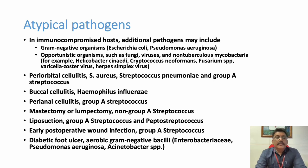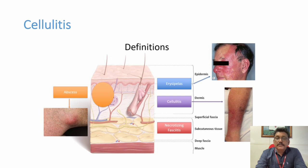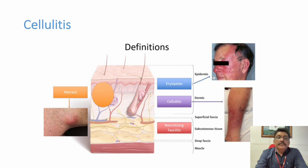Depending on the layer of skin involvement, we classify infections as: erysipelas — epidermis involved; cellulitis — dermis infection; and necrotizing fasciitis — deep fascia involved. Erysipelas is a superficial infection without systemic symptoms. Cellulitis is deeper with systemic features like fever and tachycardia. Necrotizing fasciitis is a deep infection with full toxic features including sepsis.